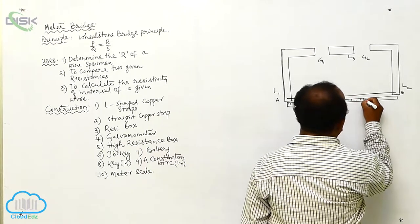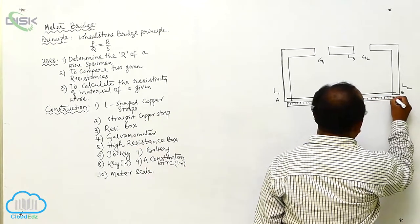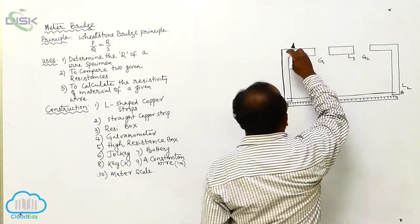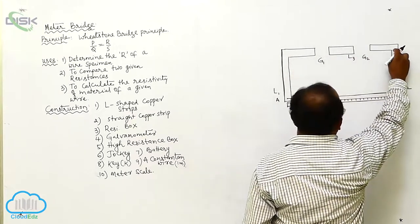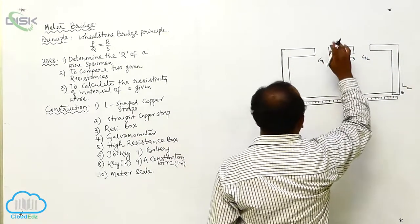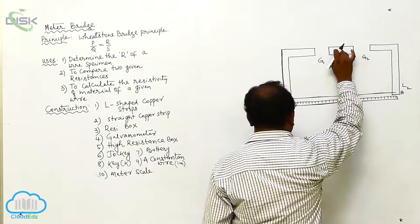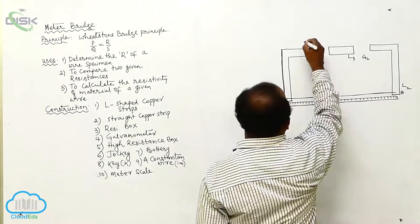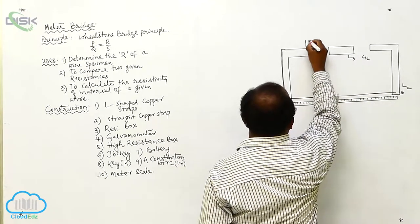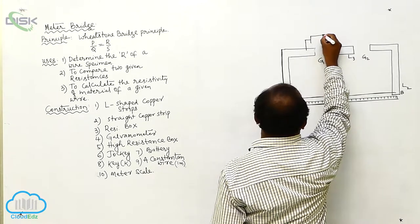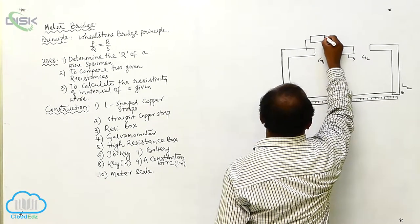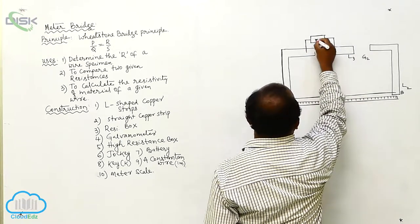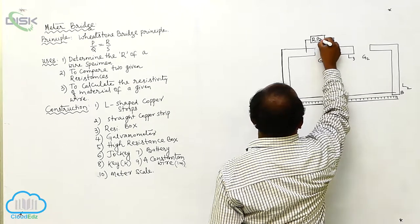100 centimeters are there. Now, across L1 and L2, by providing the flat metal strip L3, we create gaps G1 and G2. In the first gap G1, there is a resistance box. This is the resistance box.